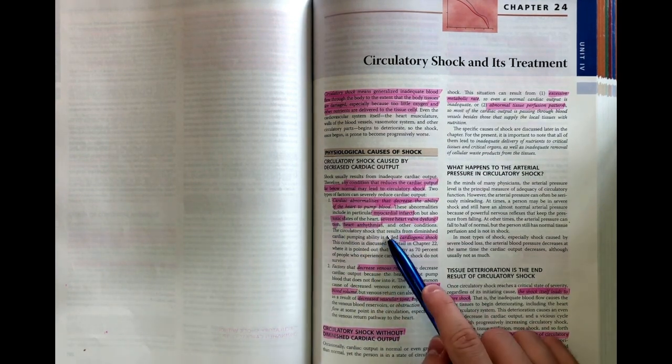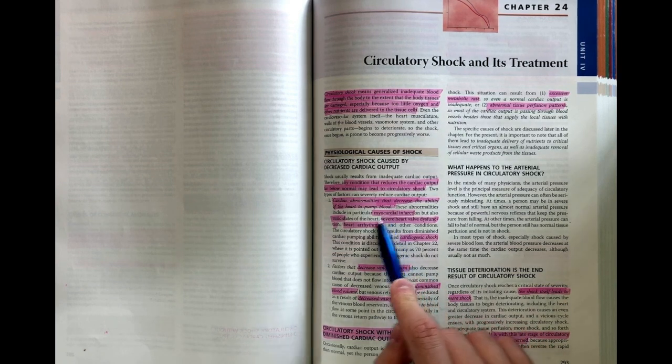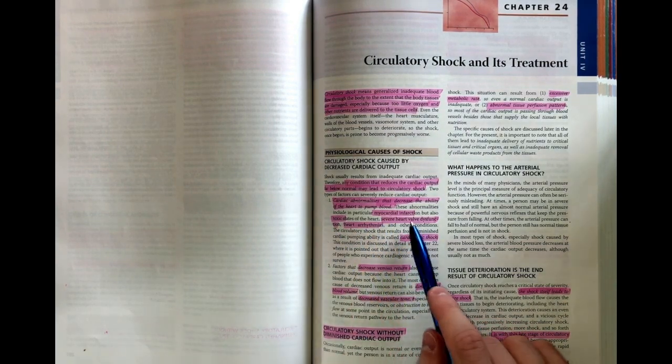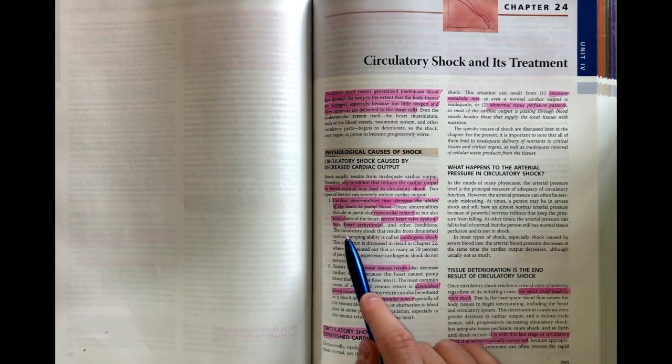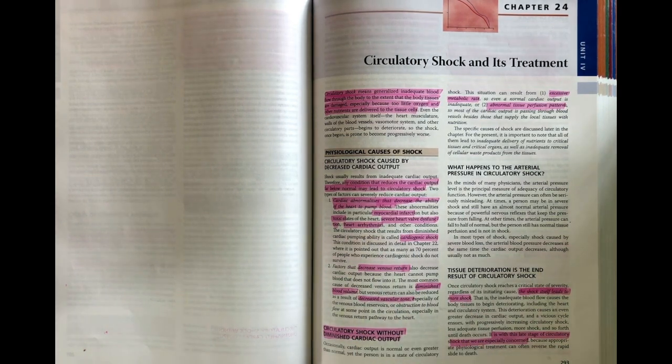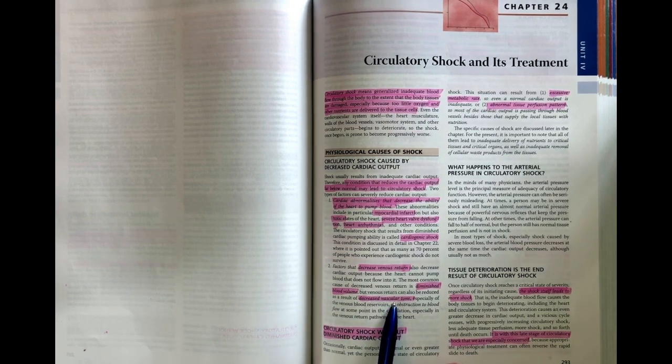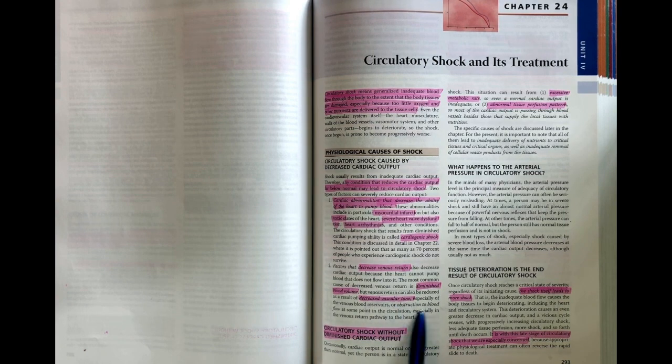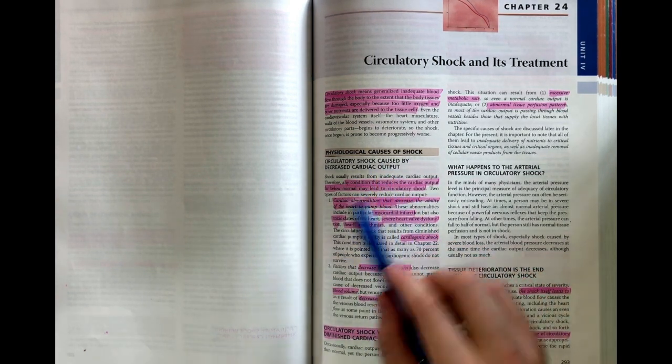The main reasons for pump problems include myocardial infarction, toxic states, severe heart valve dysfunction, and heart arrhythmias—an abnormal heartbeat all making that pump less effective. Reasons for decreased venous return include diminished blood volume, reduced vascular tone which can occur in septic conditions, or obstruction to blood flow. These causes all result in reduced cardiac output.